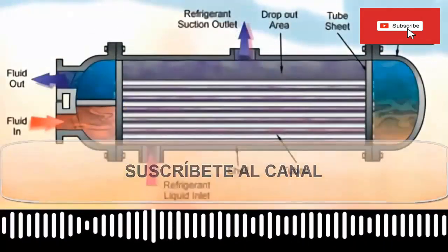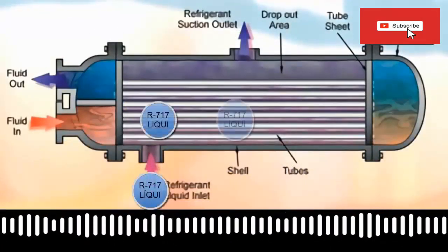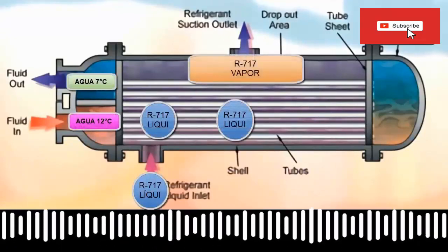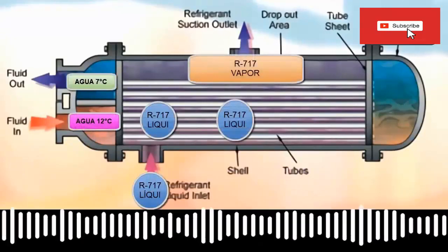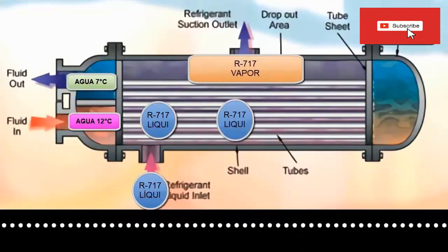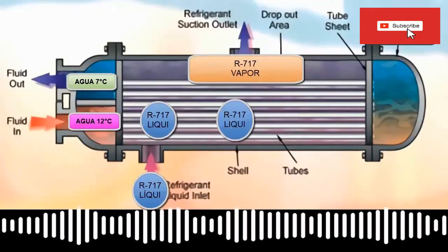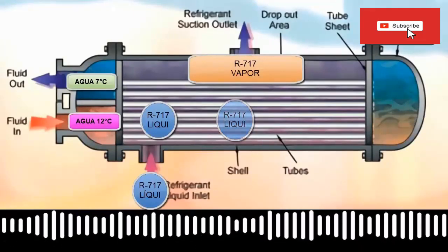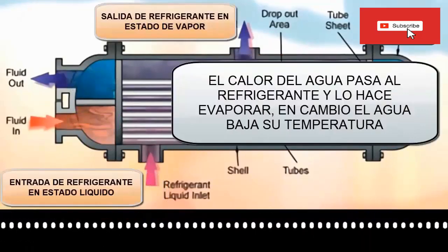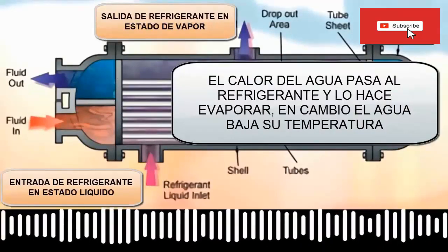The operation of this evaporator is based on accumulating a quantity of refrigerant in a liquid state inside a casing, in such a way that there is a percentage that evaporates and leaves the tank in a vapor state, while another quantity replaces it, always in a liquid state. The heat produced by the evaporation of the refrigerant comes from the water that is being cooled.